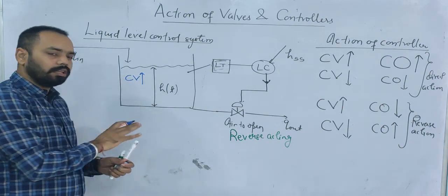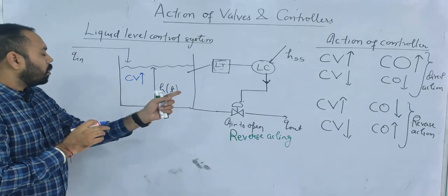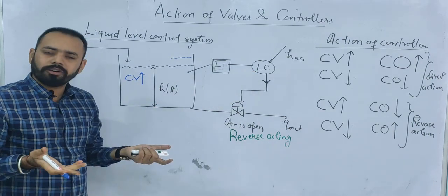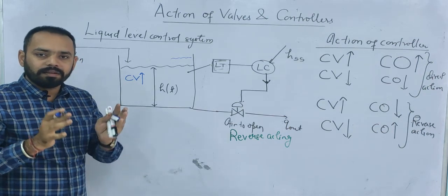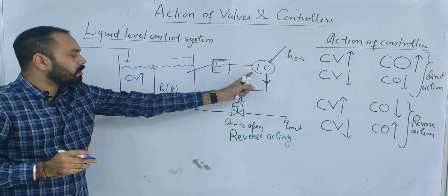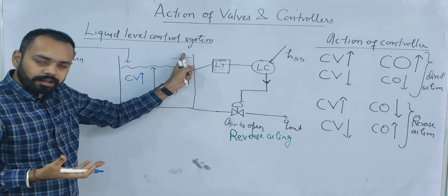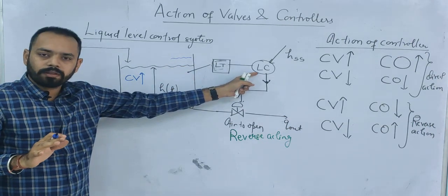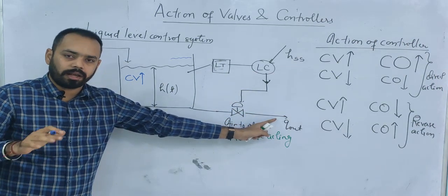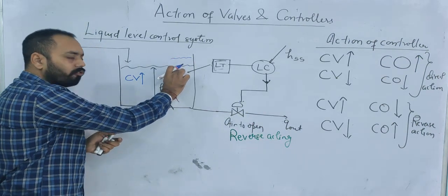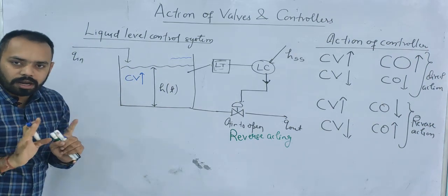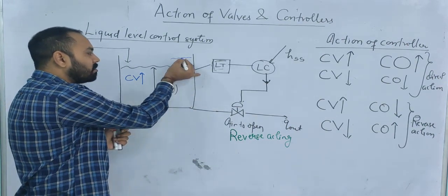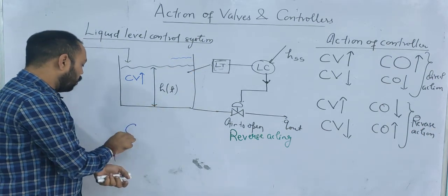If the liquid level has increased, what should the controller decide? The controller is the brain of the control system — it must restore the liquid level to its set point. To decrease the level, the controller should increase the outflow by opening the outlet valve. The inlet flow rate is a disturbance and is not under control; the manipulated variable — the outlet valve — is under the controller's control. So: CV has increased, and the controller needs to direct the valve to open.